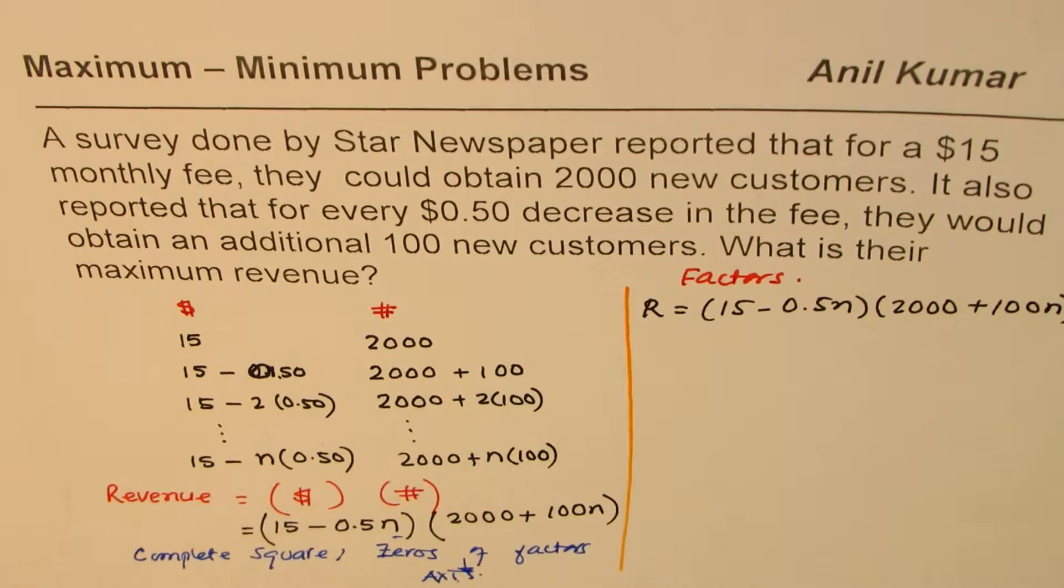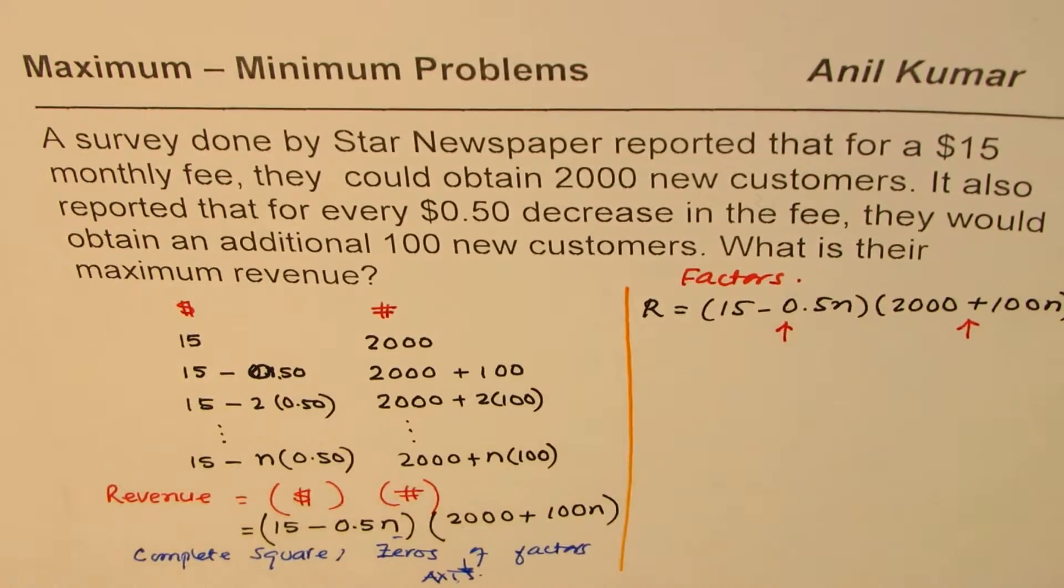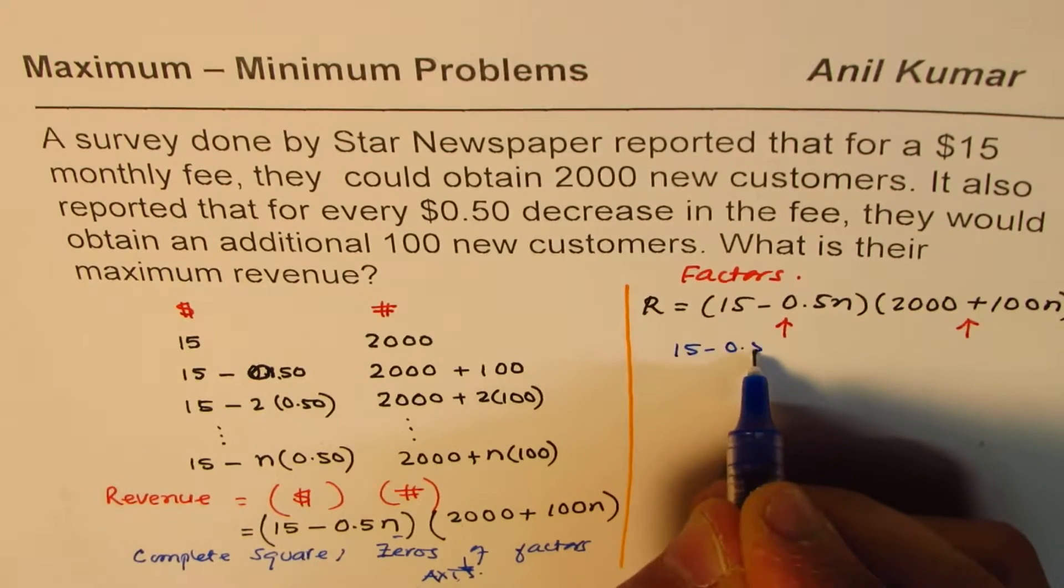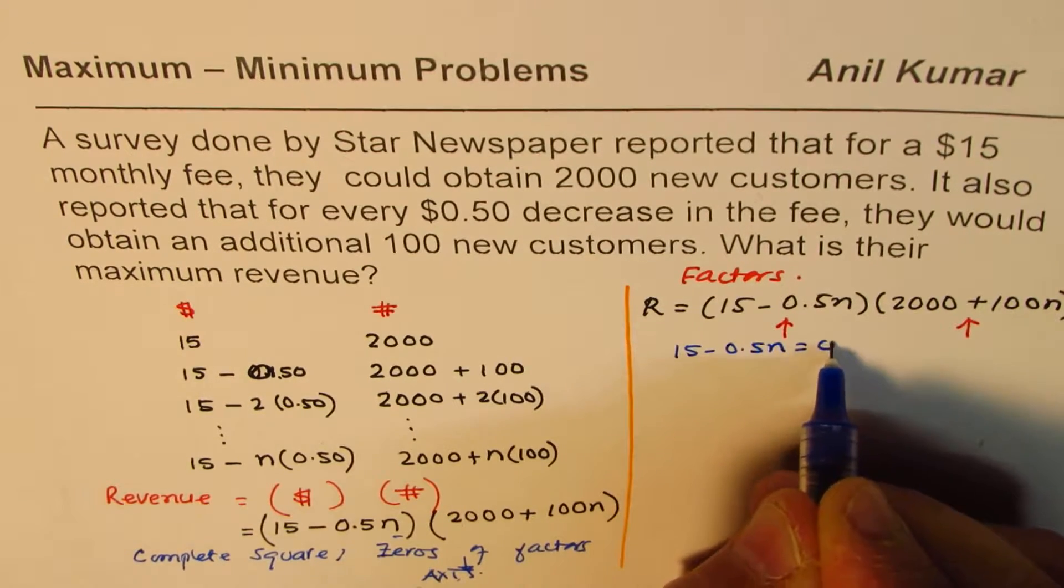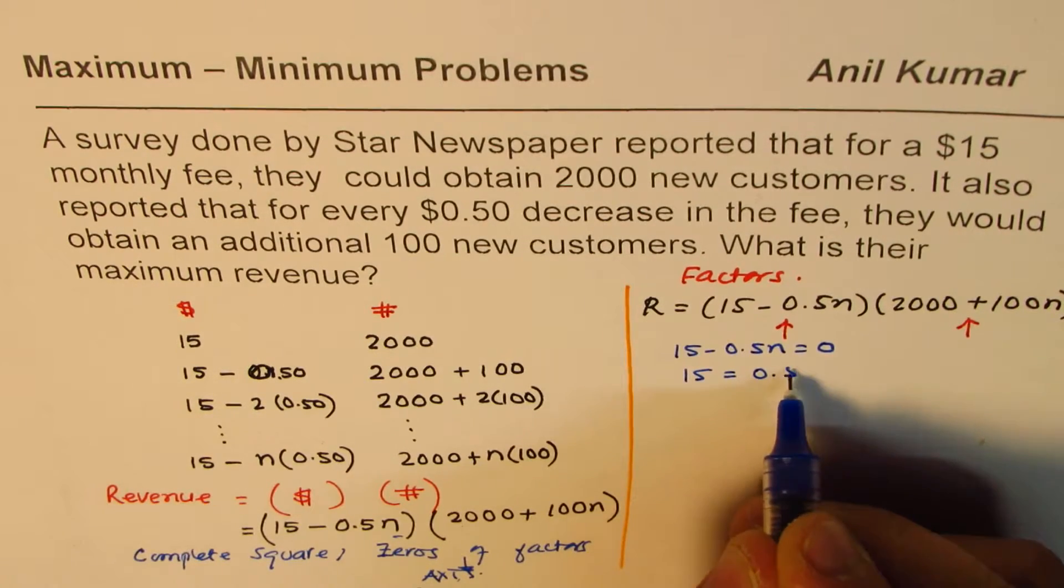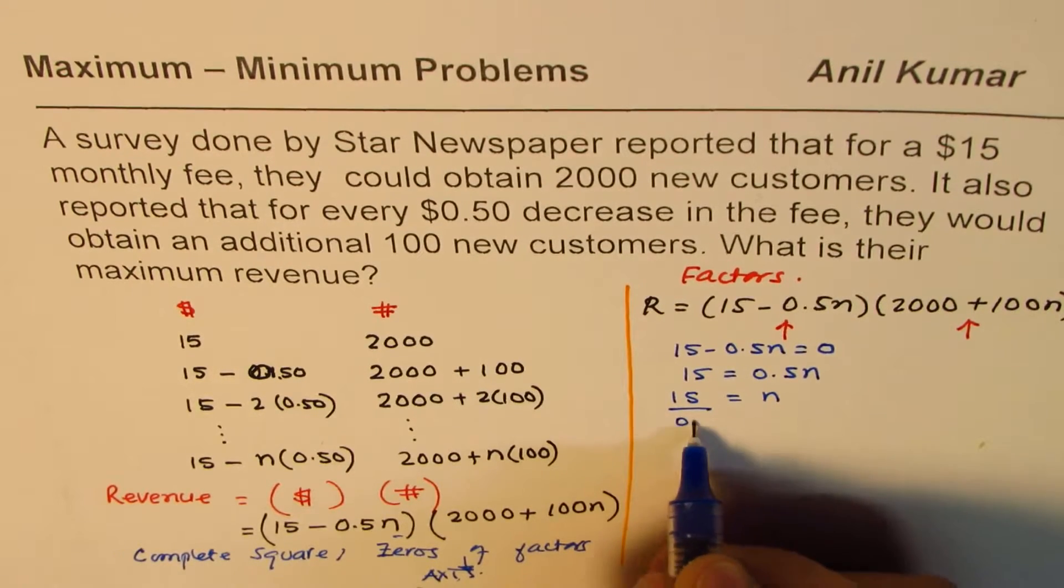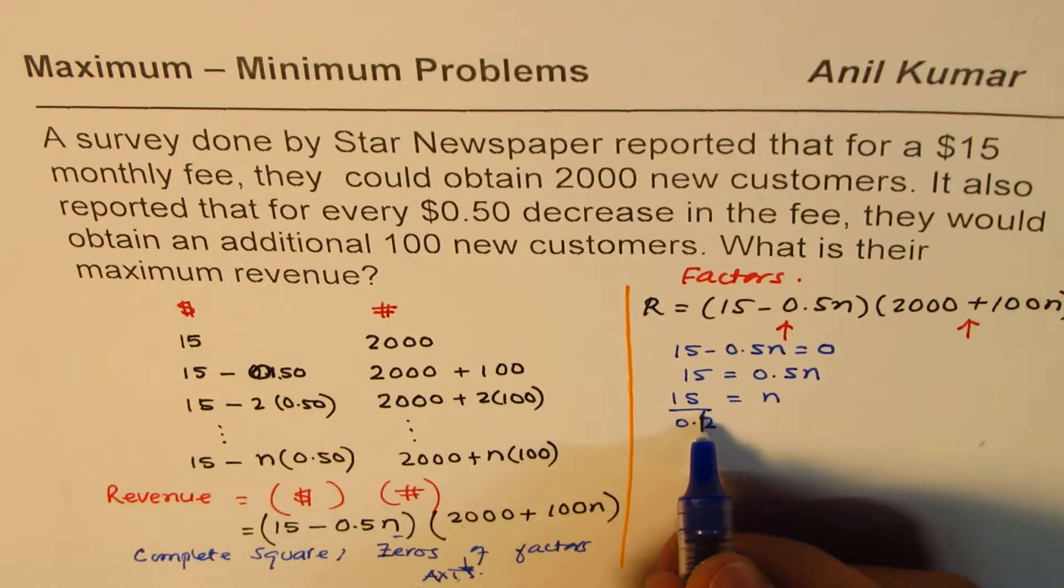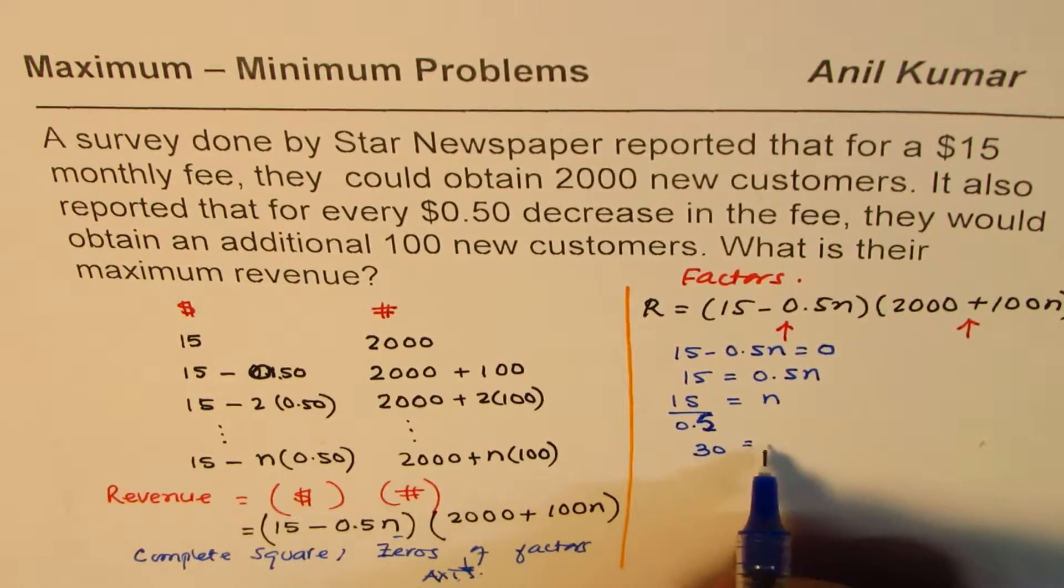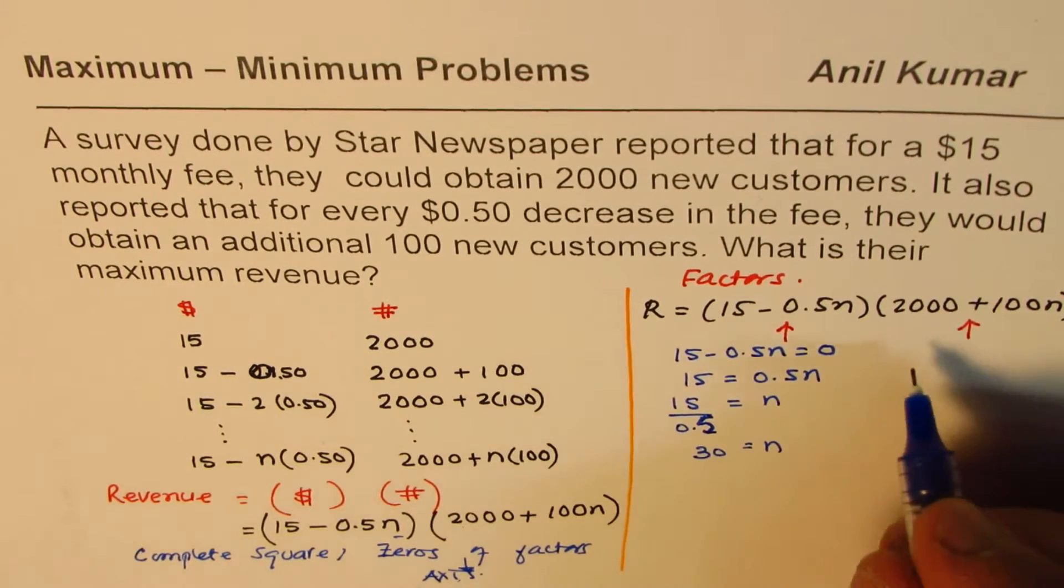Now when are these zeros? So this will be zero when? And when will this be zero? That's the whole idea. So let's equate this to zero. We have 15 minus 0.5n. When will this be zero? That means 15 equals to 0.5n or n is equals to 15 divided by 0.5. So which is 30. So n, 0.5 is half. So just multiply it by 2.